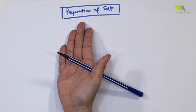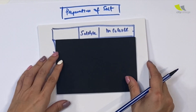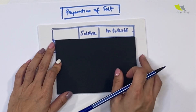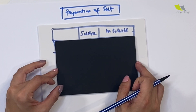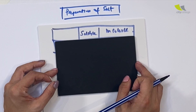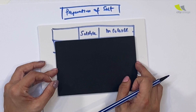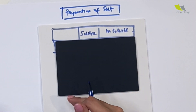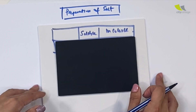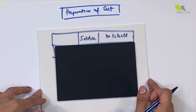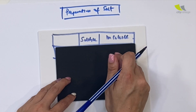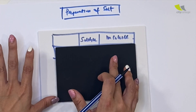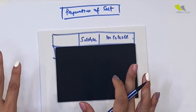I'm going to show you preparation of salt. Under preparation of salt, before we go through, we need to understand this table called the solubility salt table. Under the solubility salt table, that's when you decide whether the salt is soluble or insoluble. Whether it's soluble or insoluble, you will decide on the way of preparation.